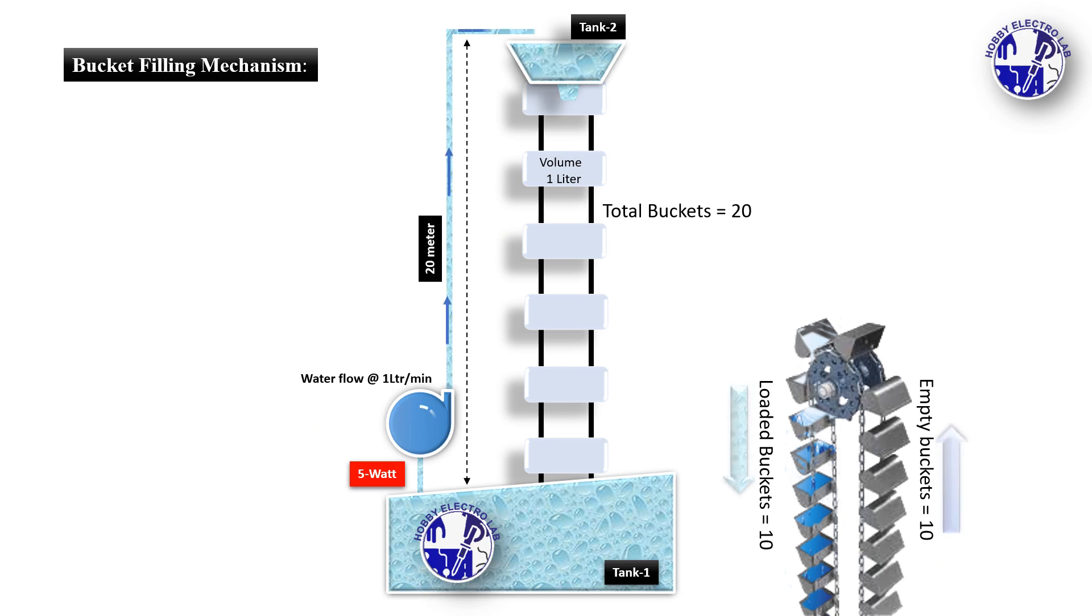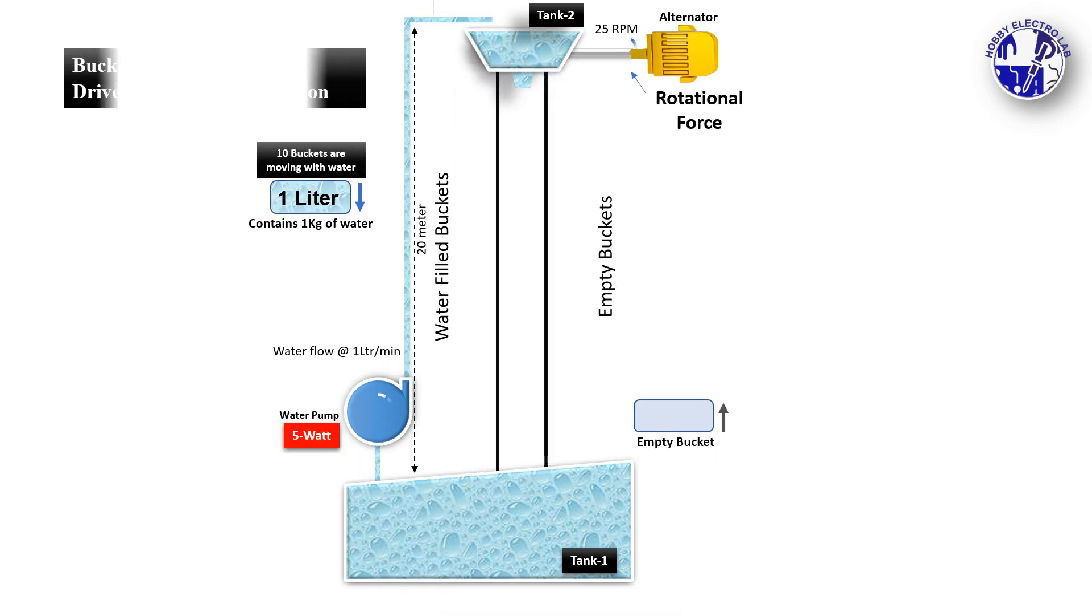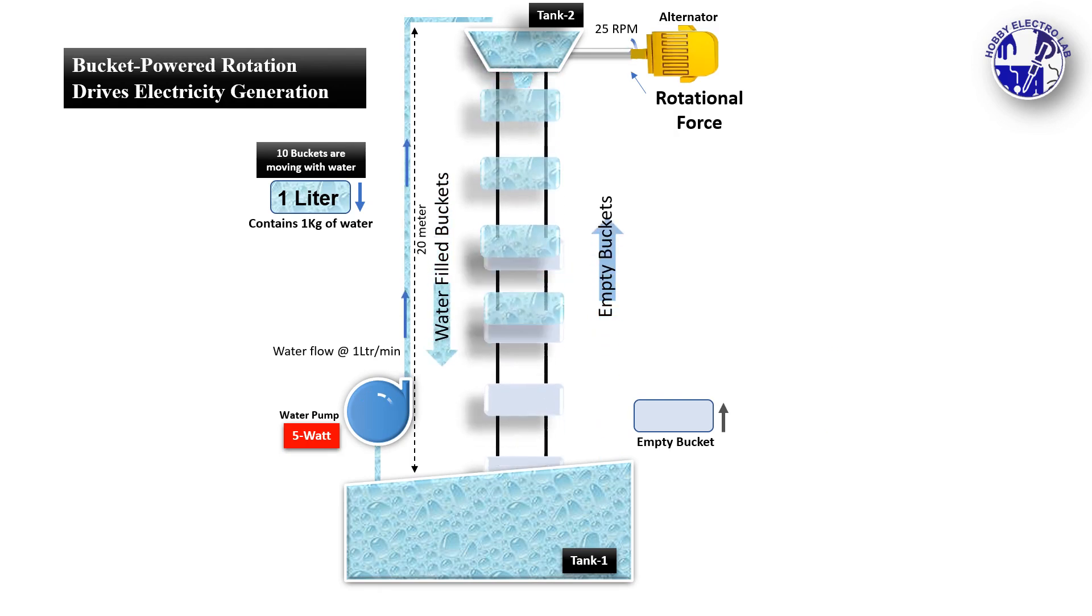At the top, water from Tank 2 is dispensed into buckets hanging on a vertical shaft. Each bucket is filled with 1 liter of water. The weight of the water in the bucket provides a rotational force to the shaft. As the buckets are filled, their weight causes the shaft to rotate.